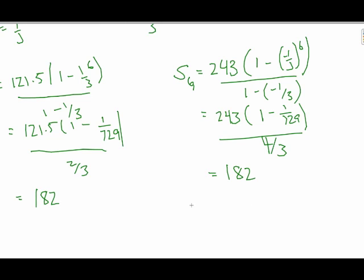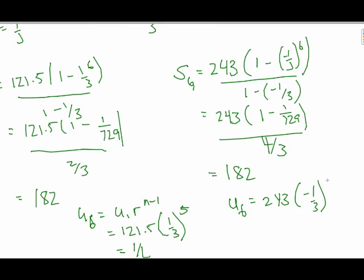The second part of the question says, find also two possible values for the sixth term. u6 is equal to u1r to the n minus 1. If I take 121.5, r is one-third to the fifth, I get one value that is one-half. When I take the other combinations of terms, I get 243 times negative one-third to the fifth. And that ends up being negative one.